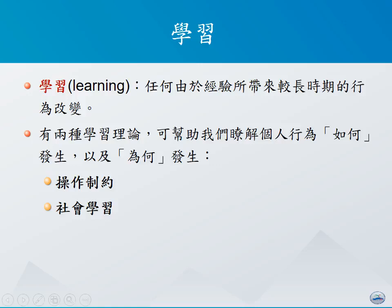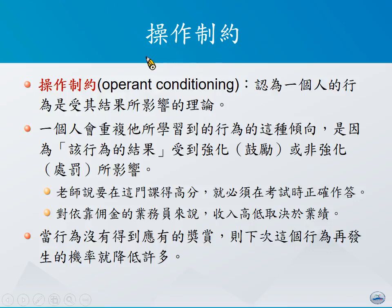最后让我们来讨论一下学习的概念。所谓的学习，泛指的是任何因为经验带来的长时间的行为改变。有两种学习的理论可以帮助我们了解为什么一个人会产生行为的改变，以及这些行为的改变是怎么样发生的，它们分别是操作制约学习论跟社会学习论这两种。首先是操作制约论（Operant Conditioning），它认为一个人的行为主要是受到他行为结果的影响，一个人会重复他所学习到的行为，是因为不断地受到强化（即鼓励），以及非强化、负强化或惩罚而造成的影响。